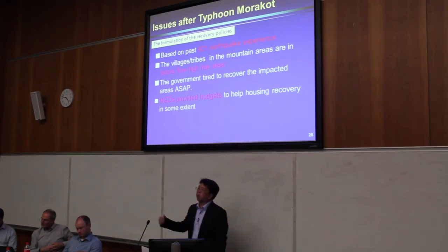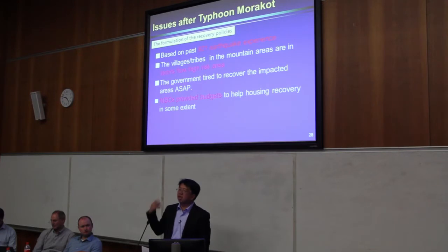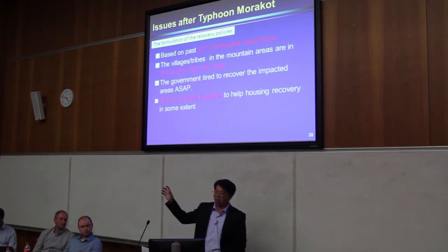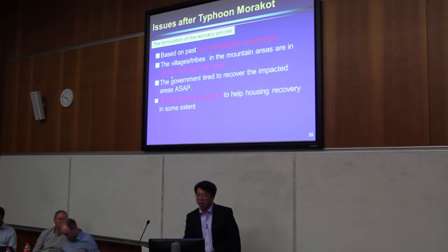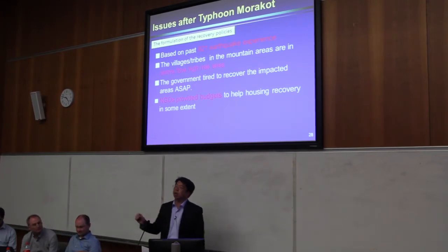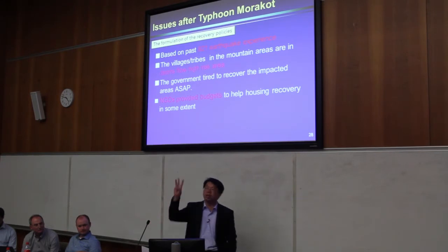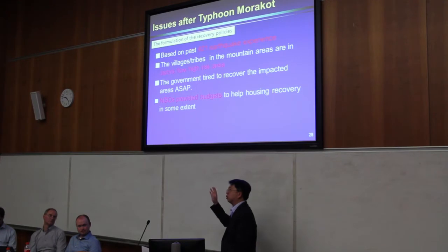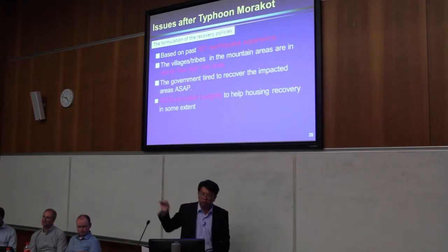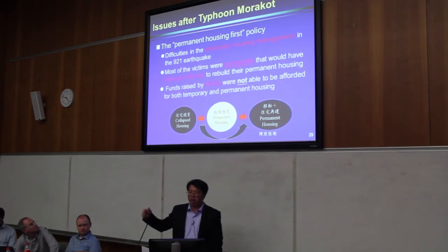At that time, it was about 10 years after the 921 earthquake, so we based our approach on past experience. Many of the impact areas were in mountain areas — villages or trips in the mountain are in very high-risk areas for debris flow or landslide. The government tried to recover the impact area as soon as possible. NGOs also provided budget to help housing recovery. In Taiwan there are three mega NGOs: the Tzu Chi Foundation (a Buddhist foundation), the Red Cross, and World Vision. These three mega NGOs tried to provide housing reconstruction.